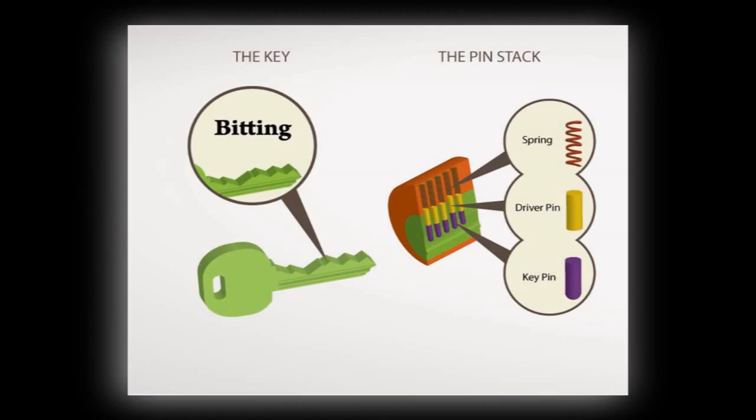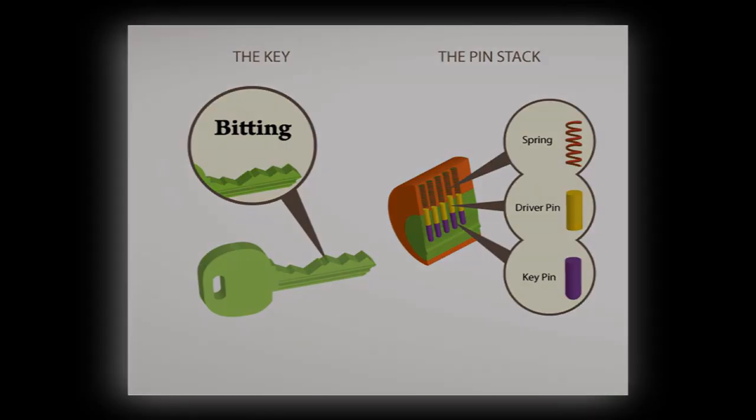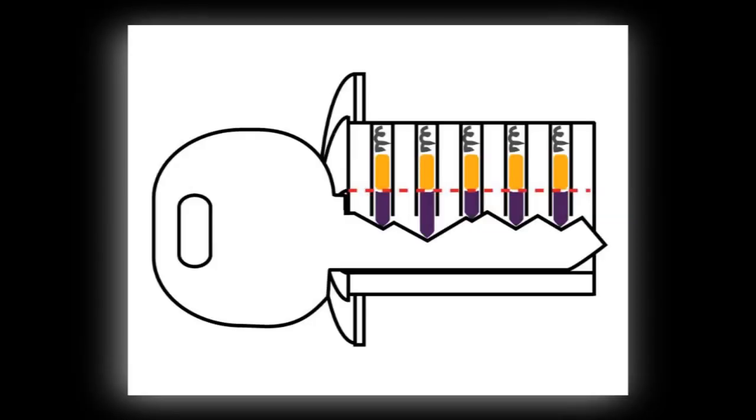Inside the lock you'll find your spring, your driver pin, and your key pin. The key pin corresponds to the heights of the bitting of your key, which is what we call the cuts in your key. With the key inserted into the lock, the key pins match the cuts in the key. With the key pins flush at that red line, which is what we call the shear line, that's the line between the plug of the lock and the Bible of the lock. When it's right there, you can turn the key freely. That's how your lock works.